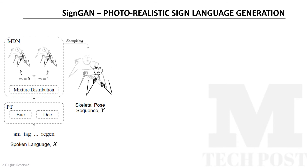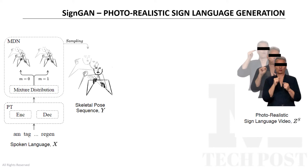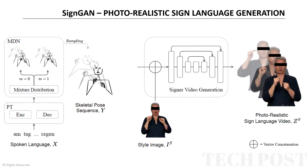To generate the photorealistic sign language video, the researchers used a conditional GAN, composed of a generator and a discriminator. The generator synthesizes a sequence of new images that are similar to a style image given as input. At the same time, such a generator is conditioned by the skeleton pose sequence sampled at the previous step. The goal of the generator is to fool the discriminator, whose purpose instead is to distinguish the real-style images from the fake images generated by the generator.